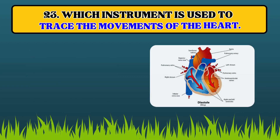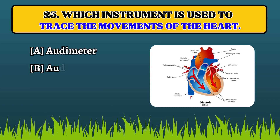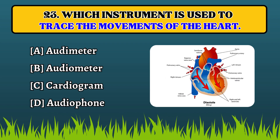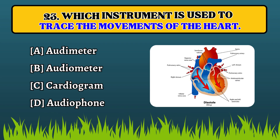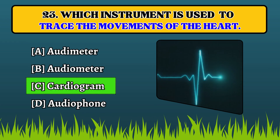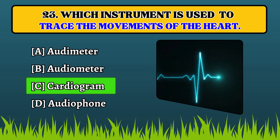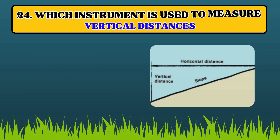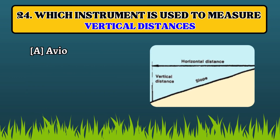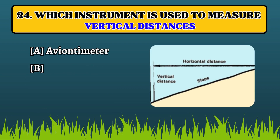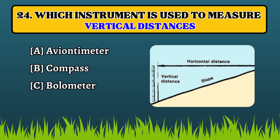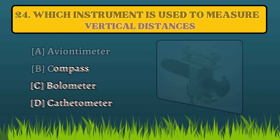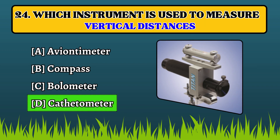Which instrument is used to trace the movements of the heart? Cardiogram. Which instrument is used to measure vertical distances? Cathetometer.